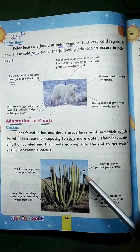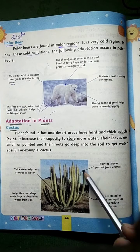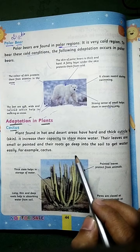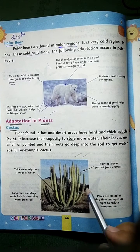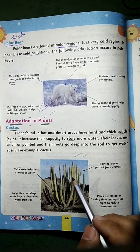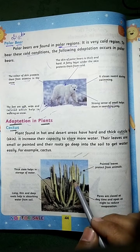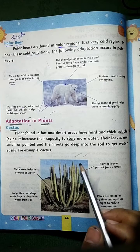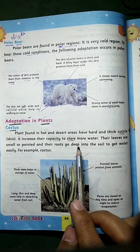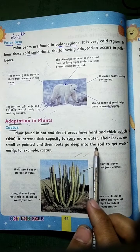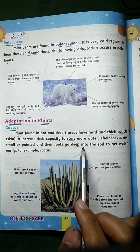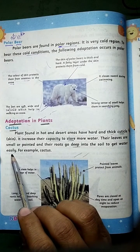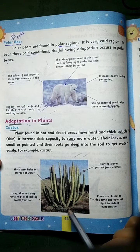Their leaves are small — inke patte bohot chote hoti hain — and pointed or nukile hoti hain. The leaves are narrow and pointed to reduce water loss. Their roots go deep into the soil — aur inke jald zameen ke andar dure tak chale jate hain — to get water easily, taqe asani se paani hasil kar sakein.